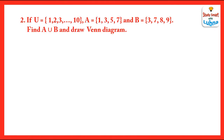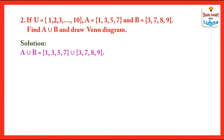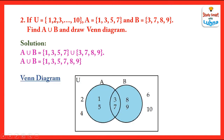Now let's move to the next example. If the universal set is equal to 1 through 10, set A has elements 1, 3, 5, 7, and set B has elements 3, 7, 8, 9, we have to find A union B and draw its Venn diagram. In union, we combine the elements of both sets, so A union B equals {1, 3, 5, 7, 8, 9}. We represent the universal set by a rectangle, and the two circles represent set A and B. Set A has elements 1, 3, 5, 7 written inside circle A.